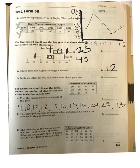For exercise 4 and 5, you need to use the table. It shows the number of students in each extracurricular school club. For number 4, they want you to find the mean, median, and mode of the data.